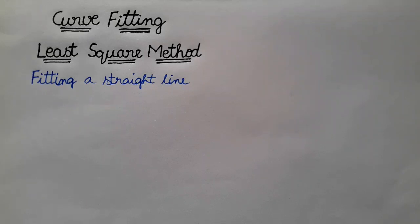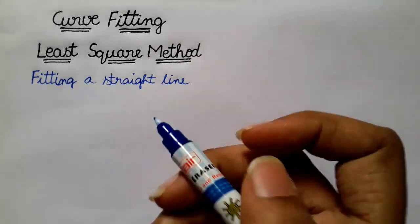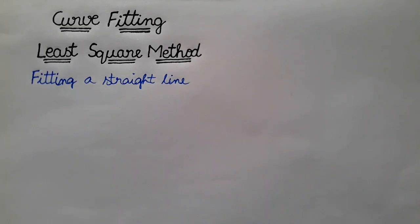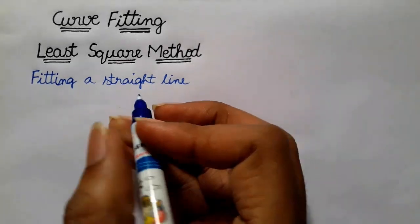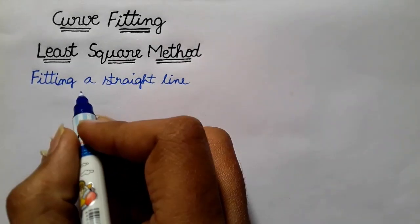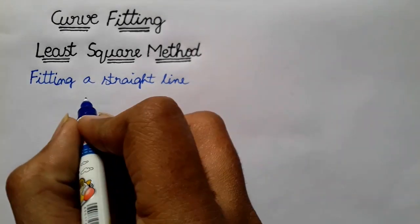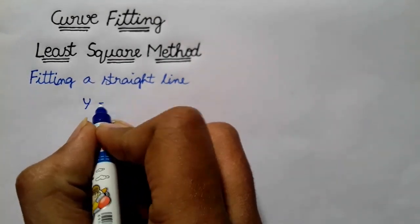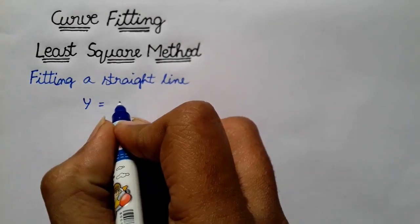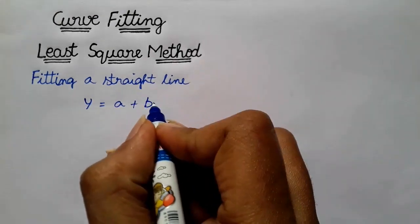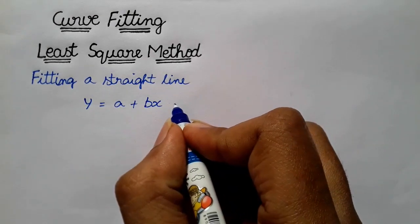In this video, we will see how the least-square method is going to be solved. How to fit a straight line using the least-square method? Fitting a straight line: y is equal to a plus bx. This is the formula.